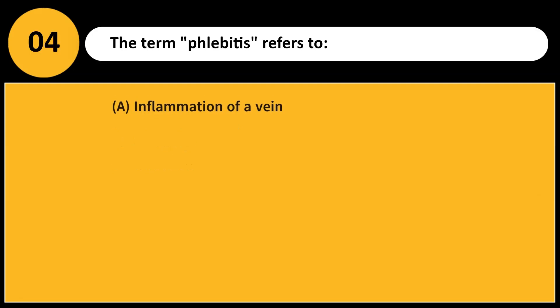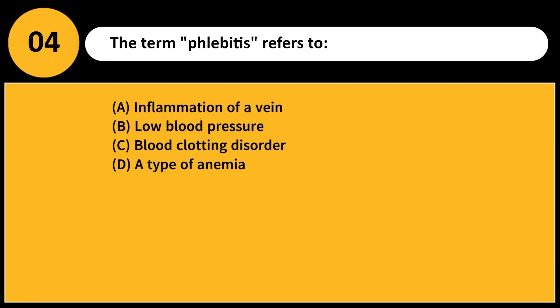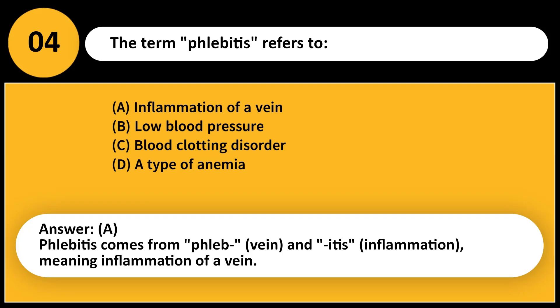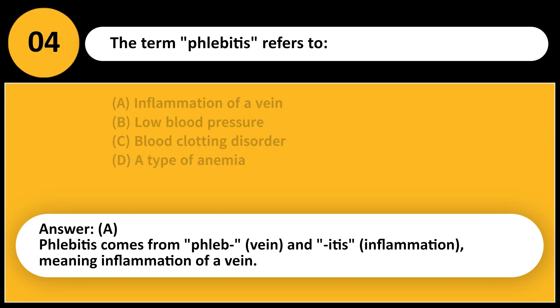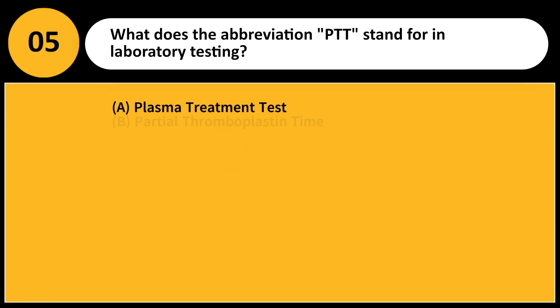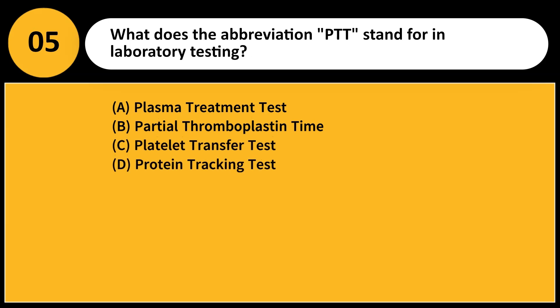The term phlebitis refers to: A. Inflammation of a vein B. Low blood pressure C. Blood clotting disorder D. A type of anemia. Answer: A. Phlebitis comes from phleb- (vein) and -itis (inflammation), meaning inflammation of a vein.